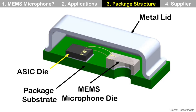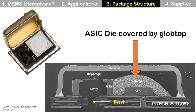Here is the package structure of a MEMS microphone. There are a package substrate, an ASIC die, a MEMS microphone die, and a metal lid. Wire bonding is used for electrical interconnection.